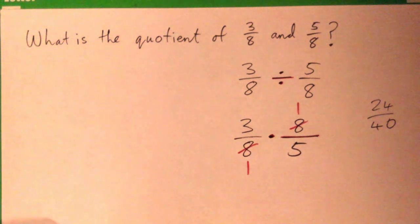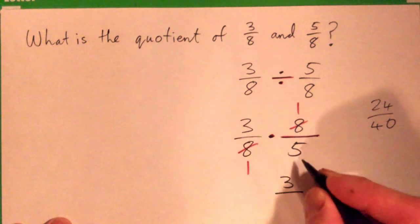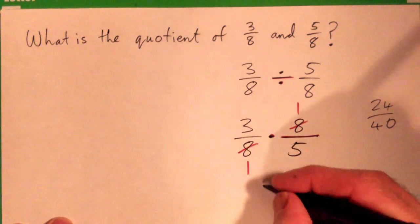So we got three times one is three, one times five is five. Okay with that?